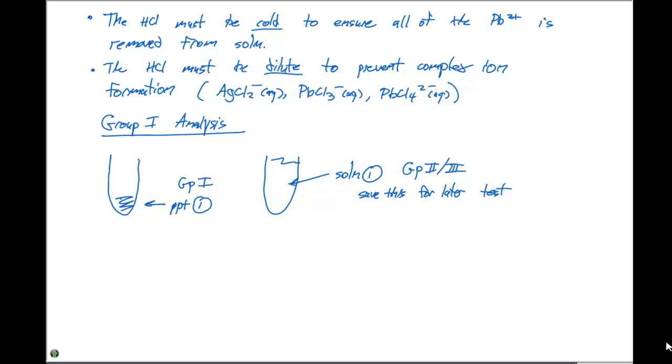So the first step is, what do we do to our group one cation precipitate to be able to separate the lead and the silver, and try to identify which one of these is present? Because if you get a white precipitate right here at this step, there's three possibilities that you have. One possibility is that there's only silver there. The second possibility is there's only lead. And the third possibility is there's both silver and lead.